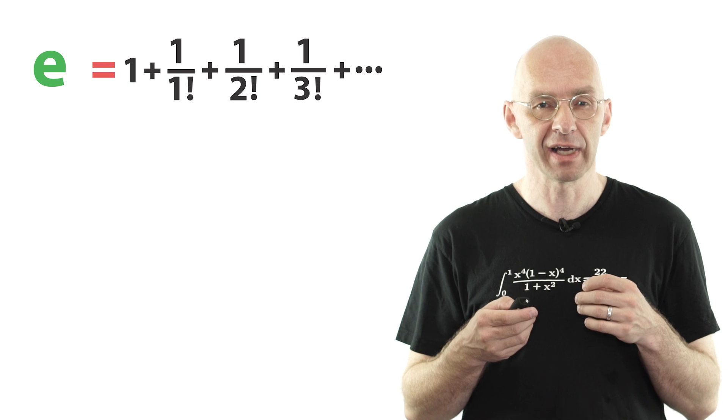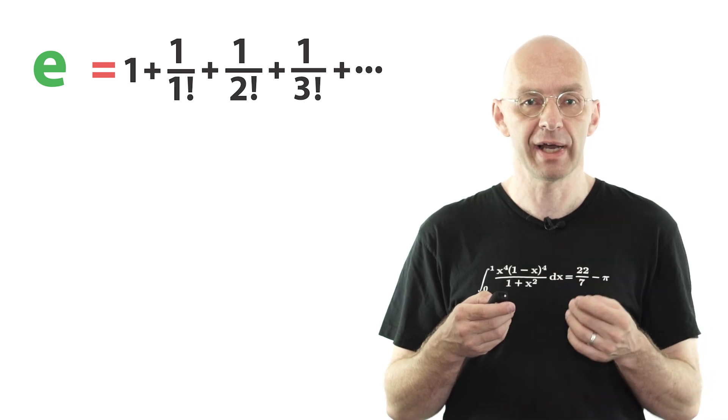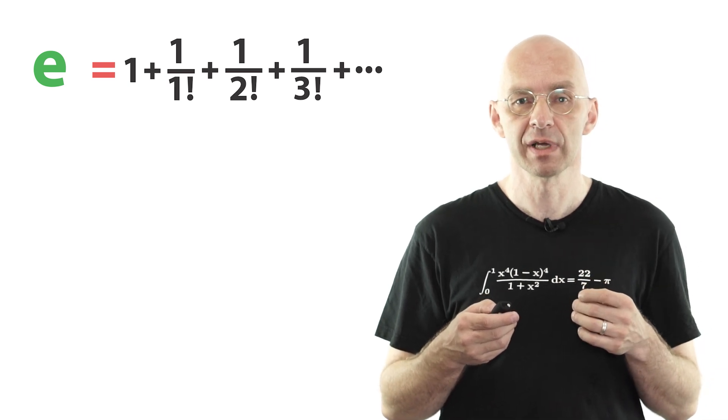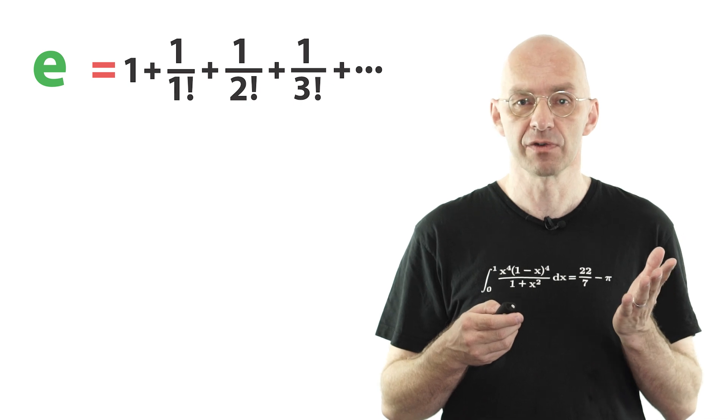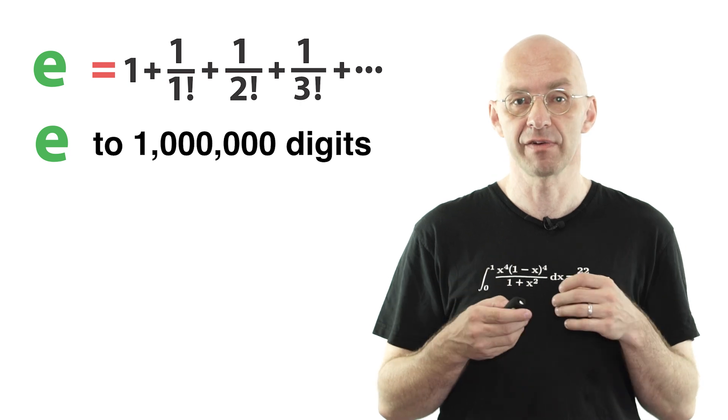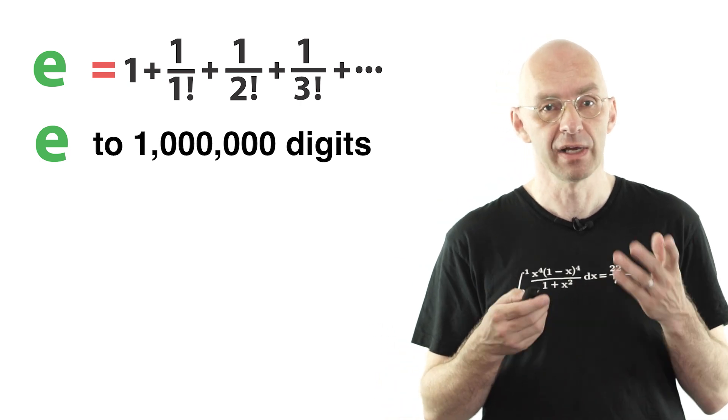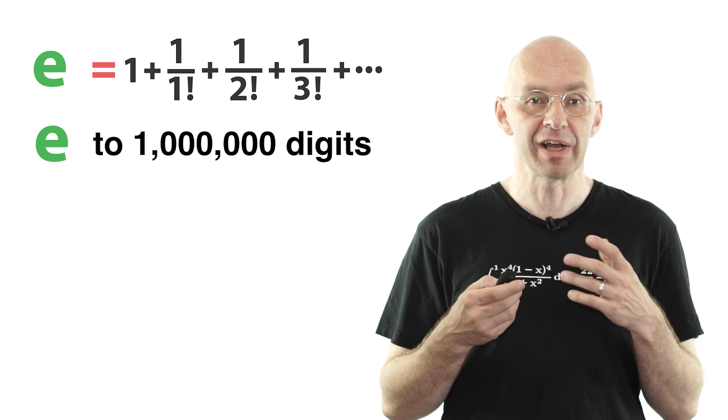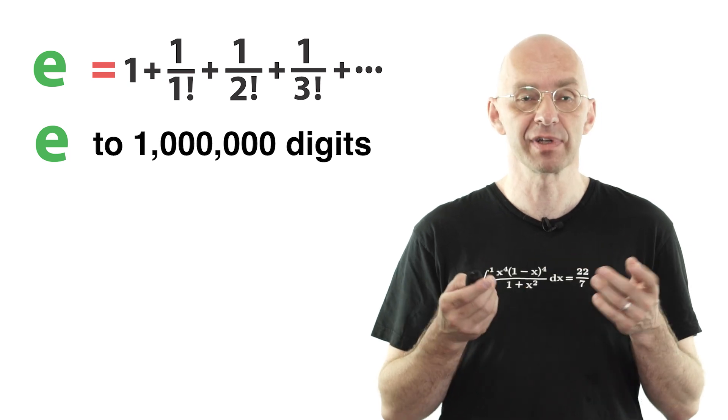Now here the main point is to figure out when you can stop adding the terms of this infinite sum and be absolutely sure that you've calculated the first, say, 1 million digits of e or however many digits you are after. Then I'll show you that e is an irrational number, why e cannot be written as a fraction.